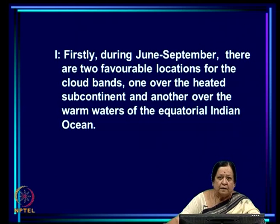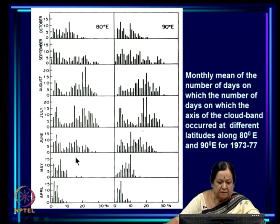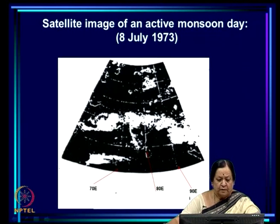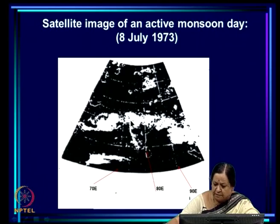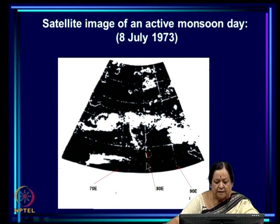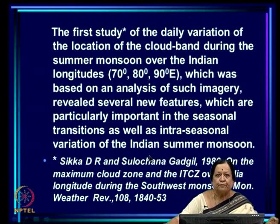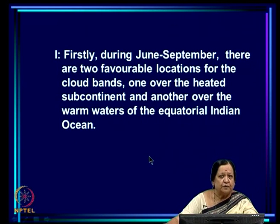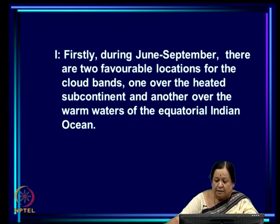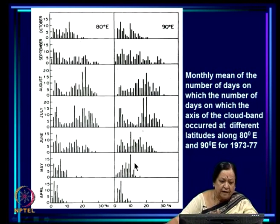Firstly, we found that during the summer monsoon there are two favorable locations for cloud bands: one over the Indian region, which is the heated subcontinent, and another over the equatorial region — specifically over the warm waters of the equatorial Indian Ocean. Cloud bands have a high propensity to occur either over the heated subcontinent or over the equatorial Indian Ocean. This bimodal distribution — that cloud bands tend to occur at two places — is reflected in the data from this study.